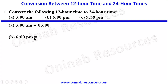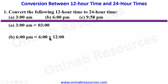For B: 6:00 p.m. Since it is p.m., any time it is p.m. we add 12 to the hour. So we have 600 plus 1200. 6 plus 12 gives 18, so 6 p.m. gives us 1800 as the 24-hour time.